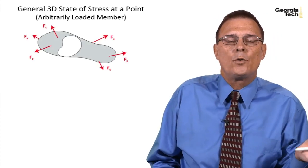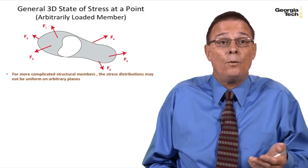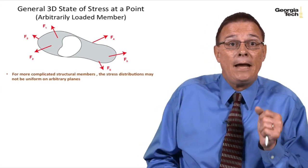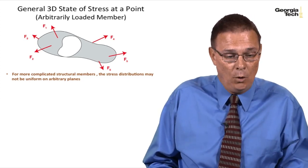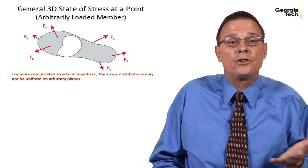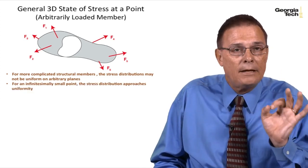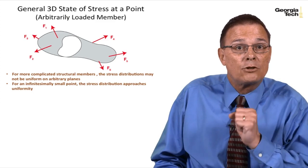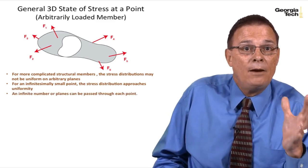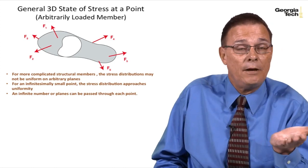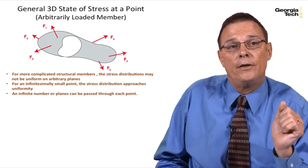Remember, for an arbitrarily loaded member, you may have complicated stress distributions. And so your stresses may not be uniform on arbitrary planes, but if we shrink down and look at an infinitesimally small point, that stress distribution does approach uniformity. And we also said that you could pass an infinite number of planes through that point to find the stresses on the different planes.